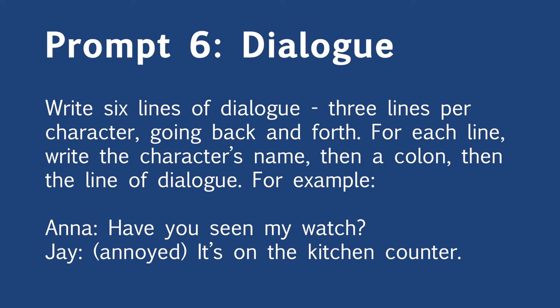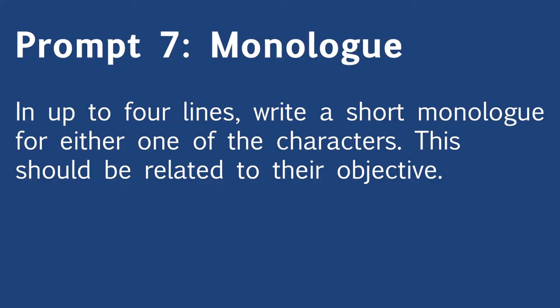If you're doing the pass-the-paper version, pass the paper after you've written the dialogue. When you get a new play, read everything from the beginning and add on. For your next prompt, write a short monologue for either one of the characters, related to that character's objective. A monologue is a longer speech where one character speaks without interruption. Write a monologue of up to four lines for either character.